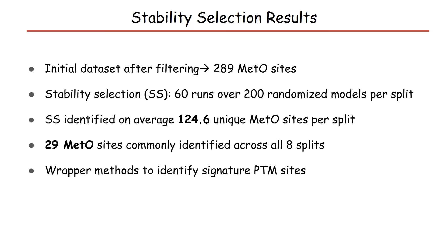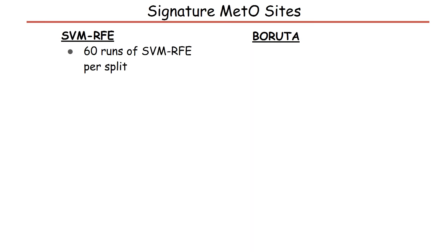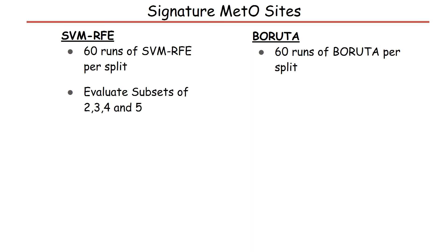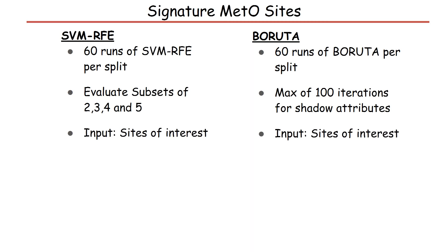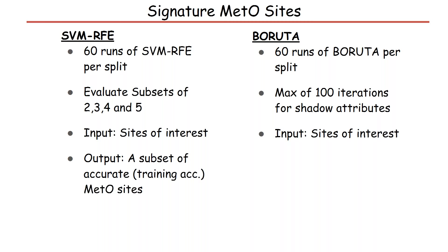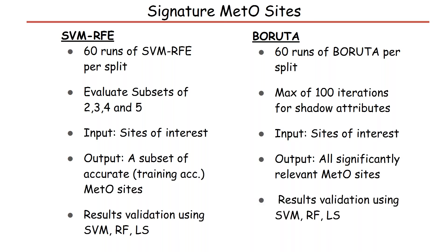Next, we apply wrapper methods to identify signature METO sites using both SVM RFE and Boruta, with 60 runs per split. With RFE, we evaluate subsets of 2, 3, 4, and 5 sites. For Boruta, a maximum of 100 iterations are allowed for creation of shadow attributes. The input to both methods is the sites of interest obtained from stability selection. The output of RFE is a subset of accurate METO sites, and the output of Boruta is all significantly relevant METO sites. Finally, we validate the signature METO sites using predictive models on the testing data.